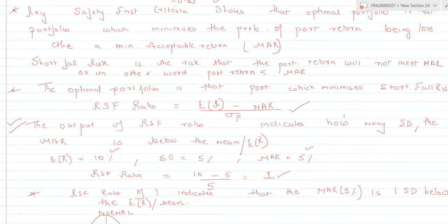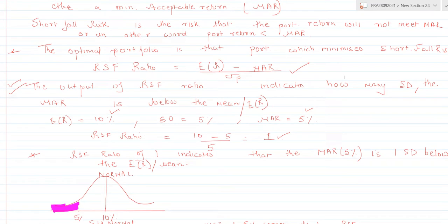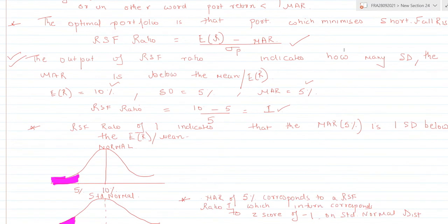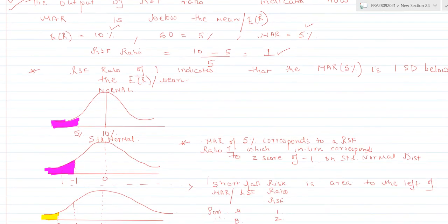Let's take a small example. The expected return of the portfolio is 10%, the standard deviation is 5%, and the minimum acceptable return is 5%. So the RSF ratio is (10% − 5%) / 5% = 1. This RSF ratio of 1 indicates that the minimum acceptable return of 5% is 1 standard deviation below the expected return of the portfolio.